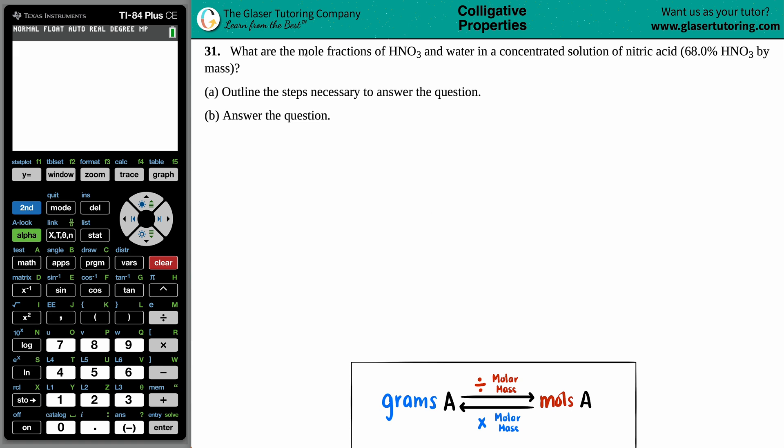Number 31, what are the mole fractions of HNO3 and water in a concentrated solution of nitric acid, which is 68.0% HNO3 by mass? Then we have to outline the steps necessary to answer the question, and then we must answer the question.